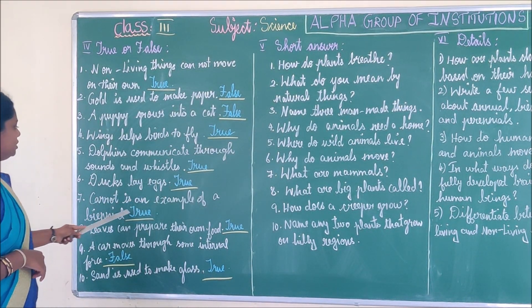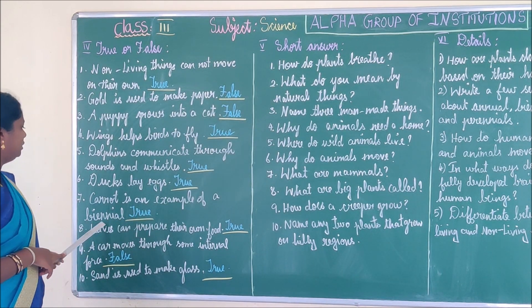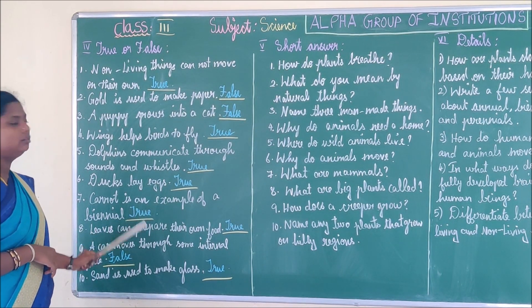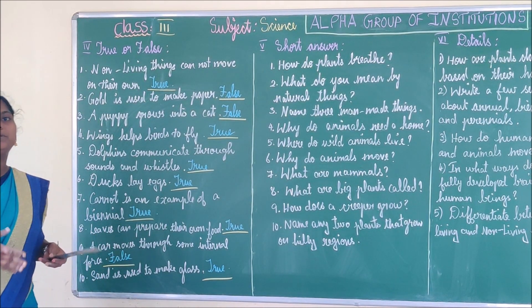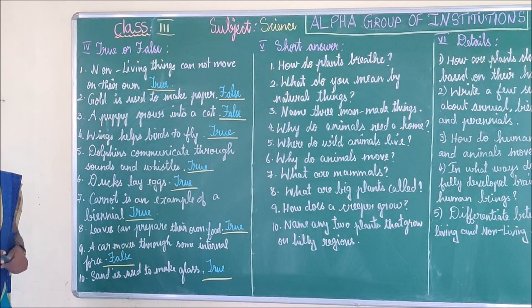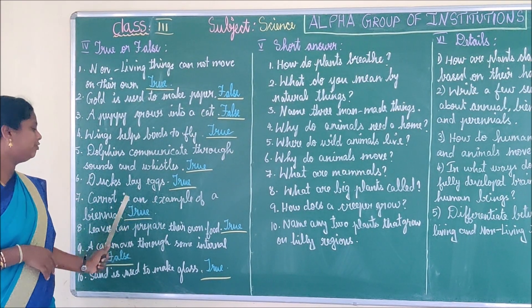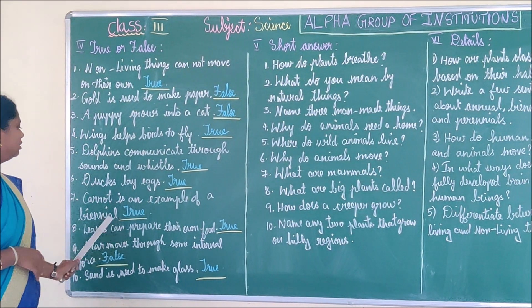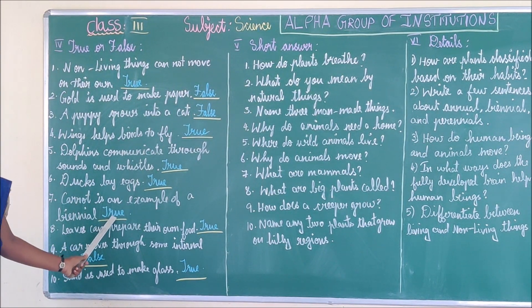Seventh statement: Carrot is an example of a biennial. Yes, of course, it is an example of a biennial. This statement is true.